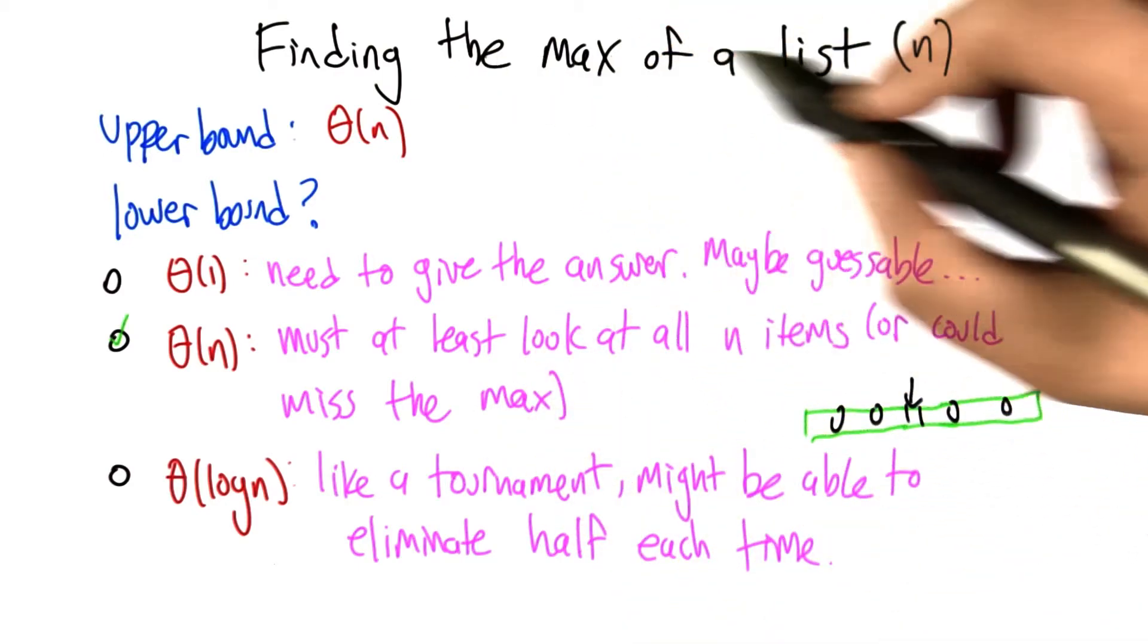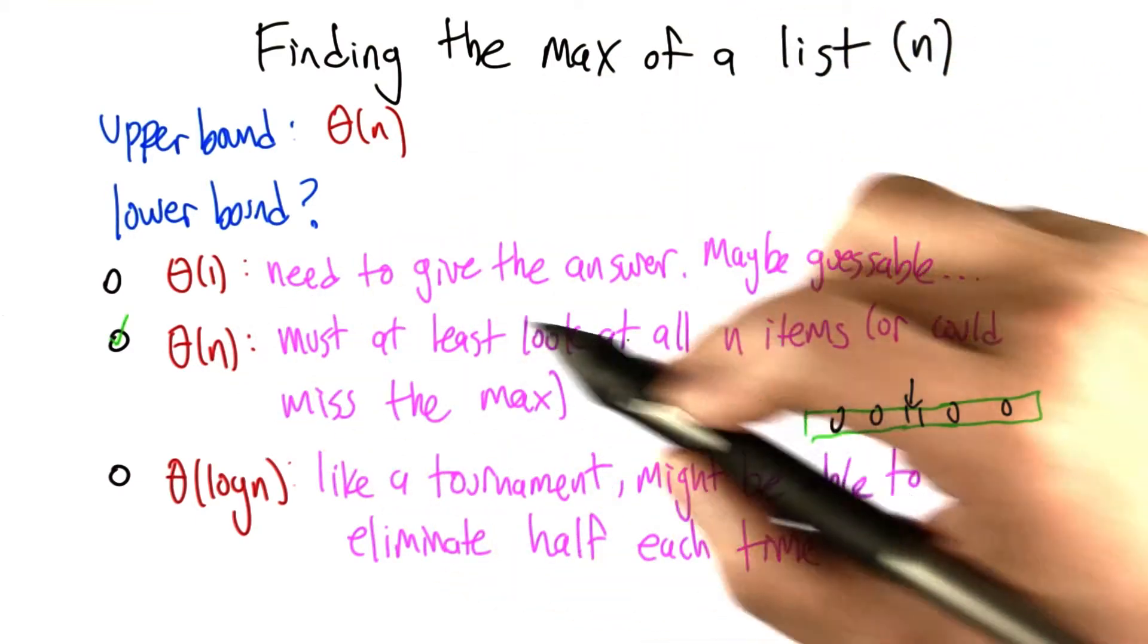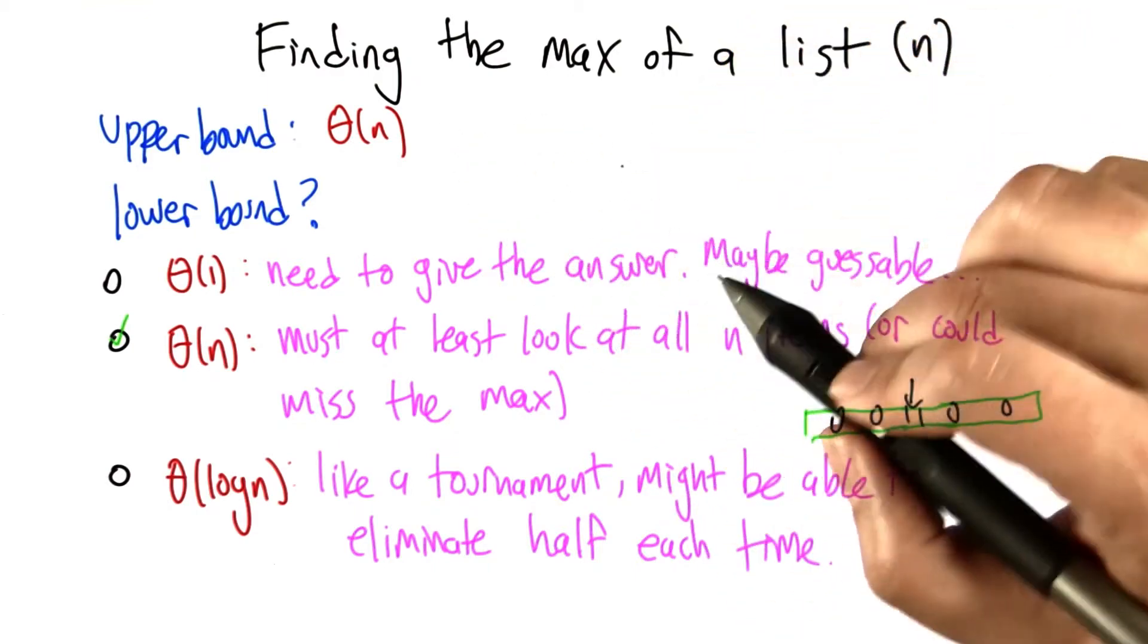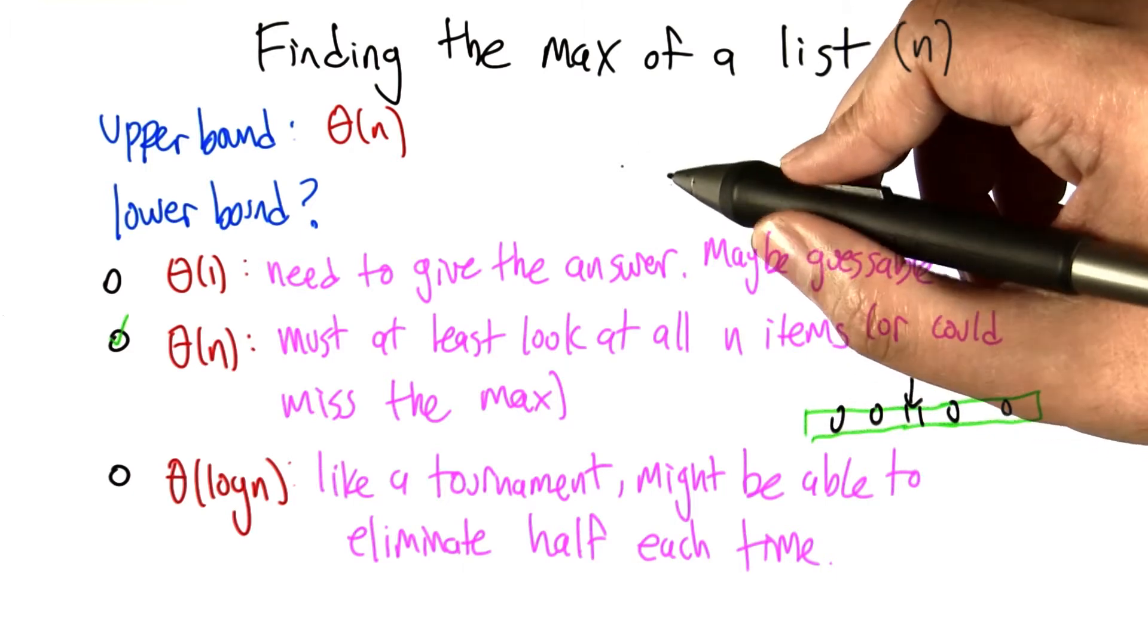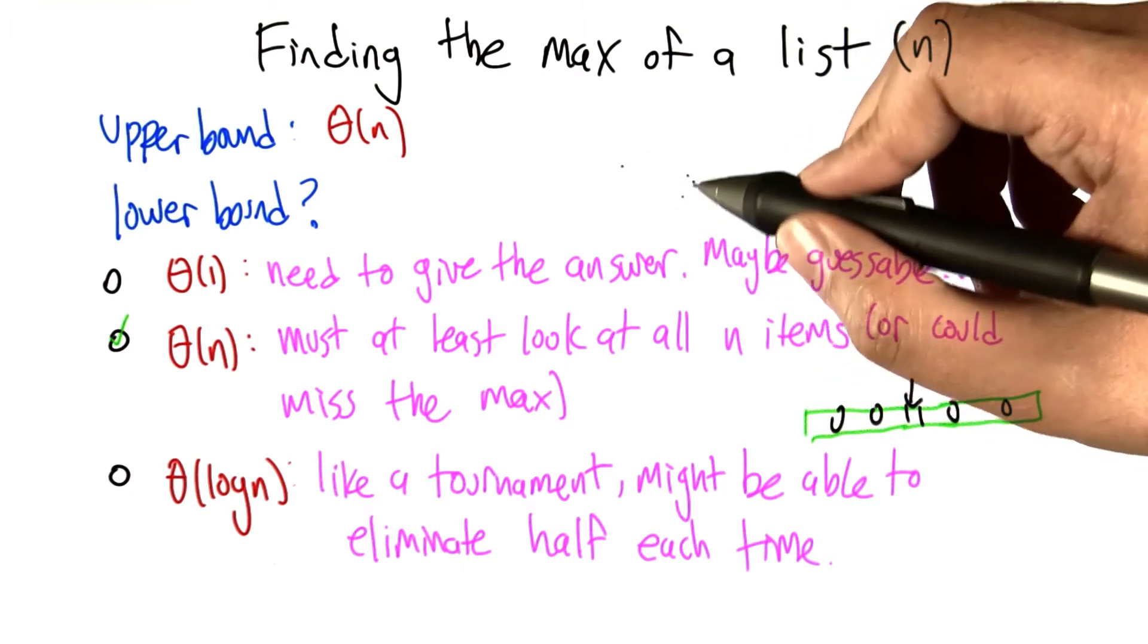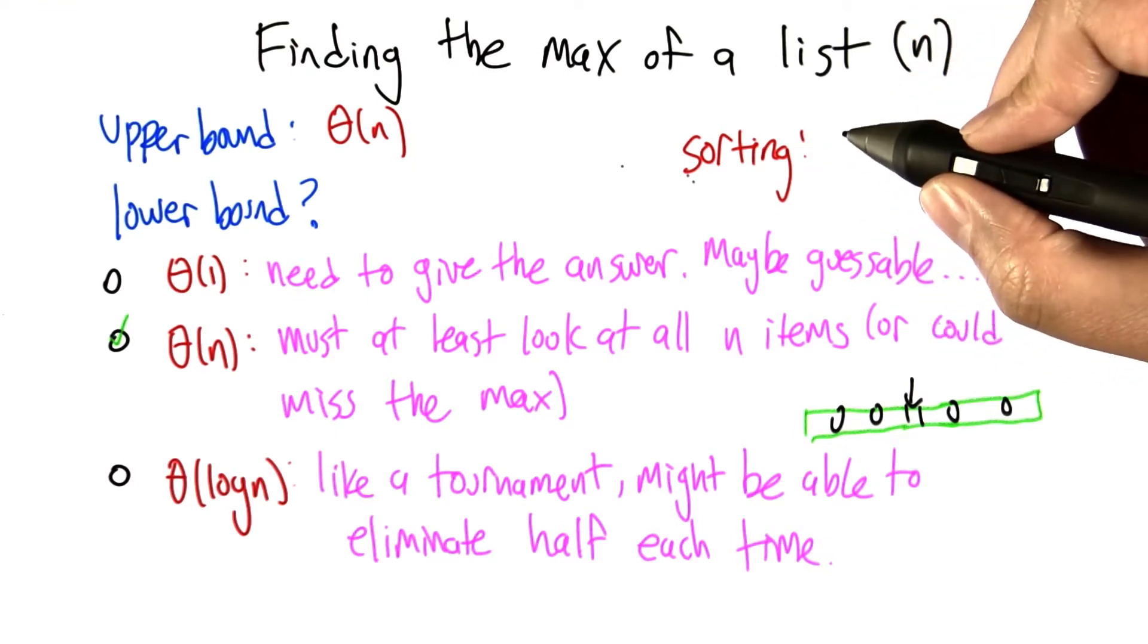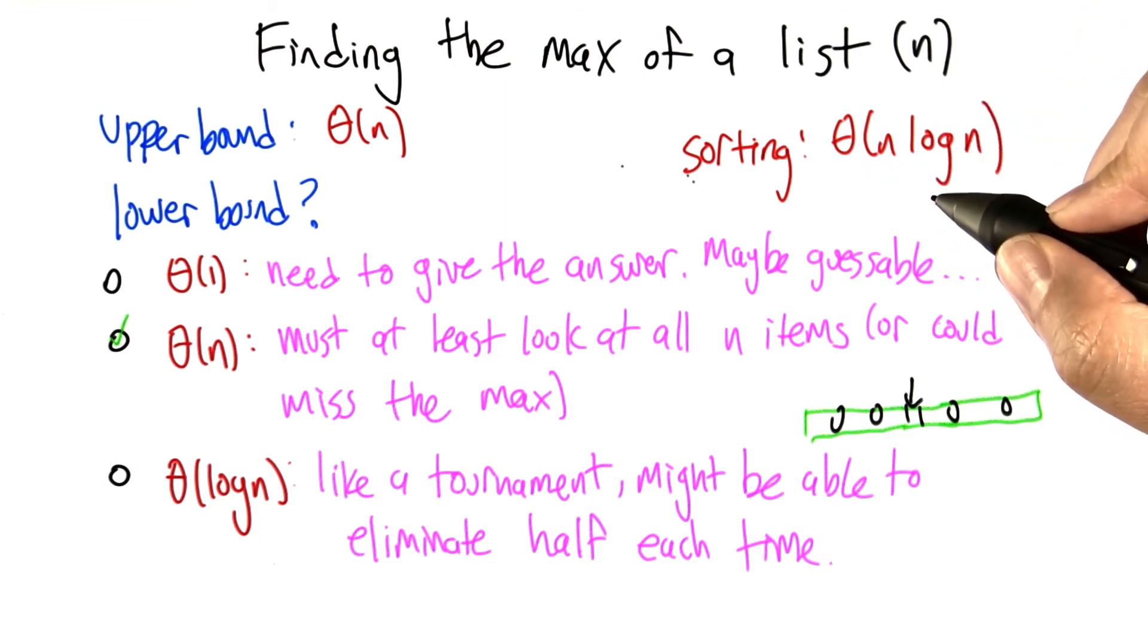So that's really cool actually because finding the max of a list we have an upper bound of theta of n and we have a lower bound of theta of n and they match each other. Another algorithm that you could get a matching upper and lower bound without too much work is for sorting, at least under the model where we're counting the number of comparisons of elements you have to do. And it turns out that in fact sorting under a comparison model has matching upper and lower bounds of n log n. So this n log n that we've been having for sorting is essentially the best you can do.